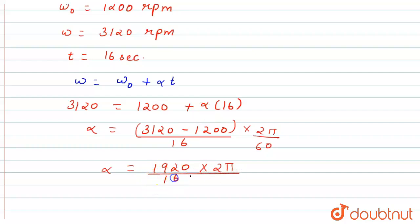This zero will be cancelled with this zero. And now I will divide. Firstly, 192 times 2, this will be 384 π divided by 16 times 6. This will be 96.